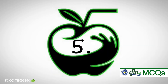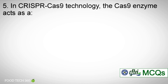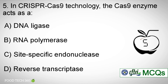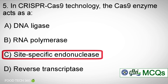Question number five: In CRISPR-Cas9 technology, the Cas9 enzyme acts as a — Options: A) DNA ligase, B) RNA polymerase, C) Site-specific endonuclease, D) Reverse transcriptase. Correct answer: C) Site-specific endonuclease.